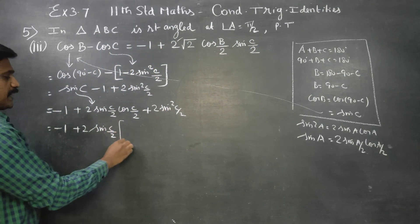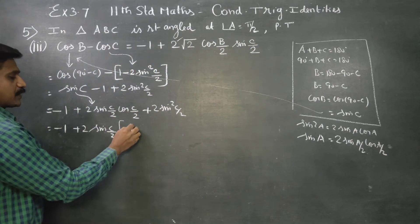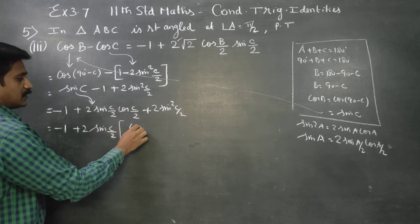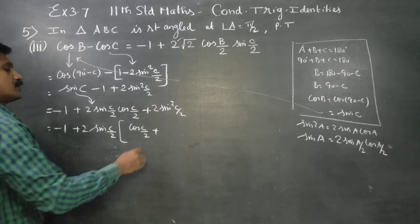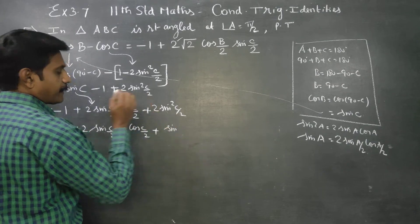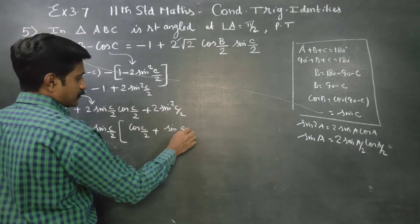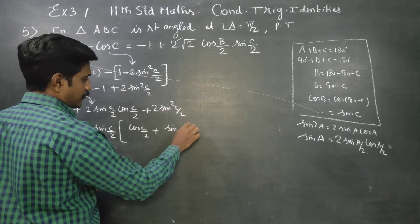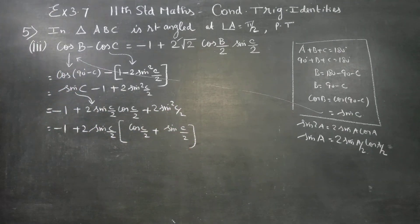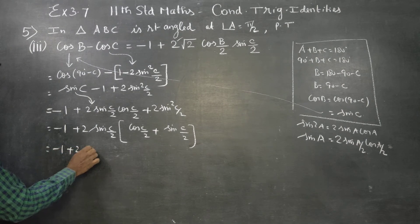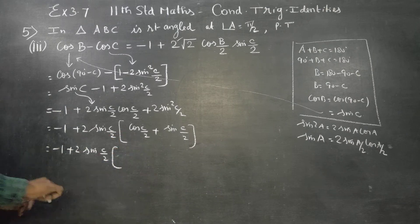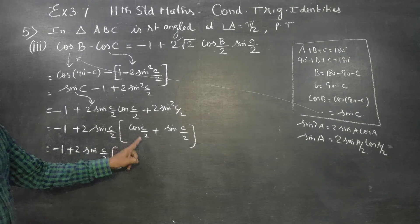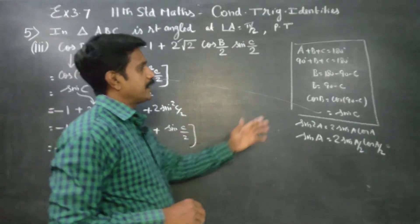Now balance — this is cos(c/2), this is sin(c/2). This is minus 1 plus 2 sin(c/2), reduced by cos(c/2).